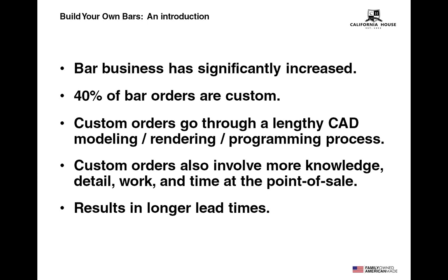Over the last several years, however, our bar business has changed. We are now manufacturing more bars as a percentage of our overall business. Today, almost 40% of our bar business is custom in that we cannot simply enter an order using a SKU from the price list and begin manufacturing it in line with other items. While this custom production is absolutely important to us — it separates California House from our competitors and gives our customers the freedom to create — it has also created challenges here at the factory that we have to address.